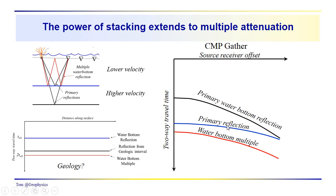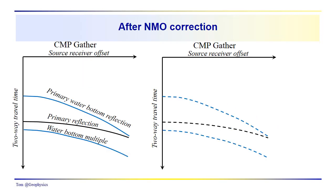And it's basically traveling at the same velocity as the primary and the water bottom. Of course, we're going up and down twice, so it doesn't perfectly parallel the shallower reflector. So, here's our CMP gather. Here's the primary water bottom reflection, the primary reflection, the water bottom multiple.